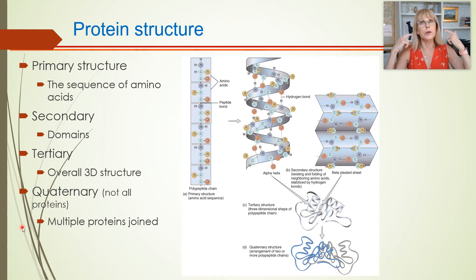Now, that structure is understood on four different levels. The first level is primary structure. Primary means first, so this is the first level of structure that we think about, and this level, primary structure, is literally the sequence of the amino acids.